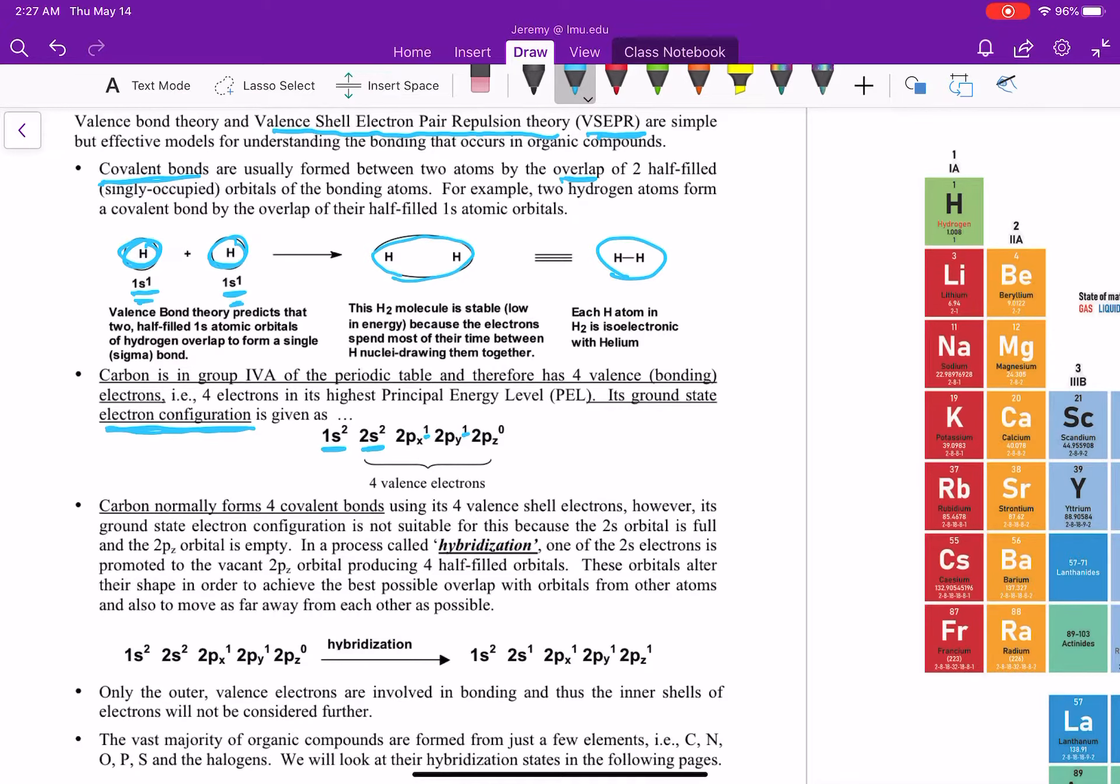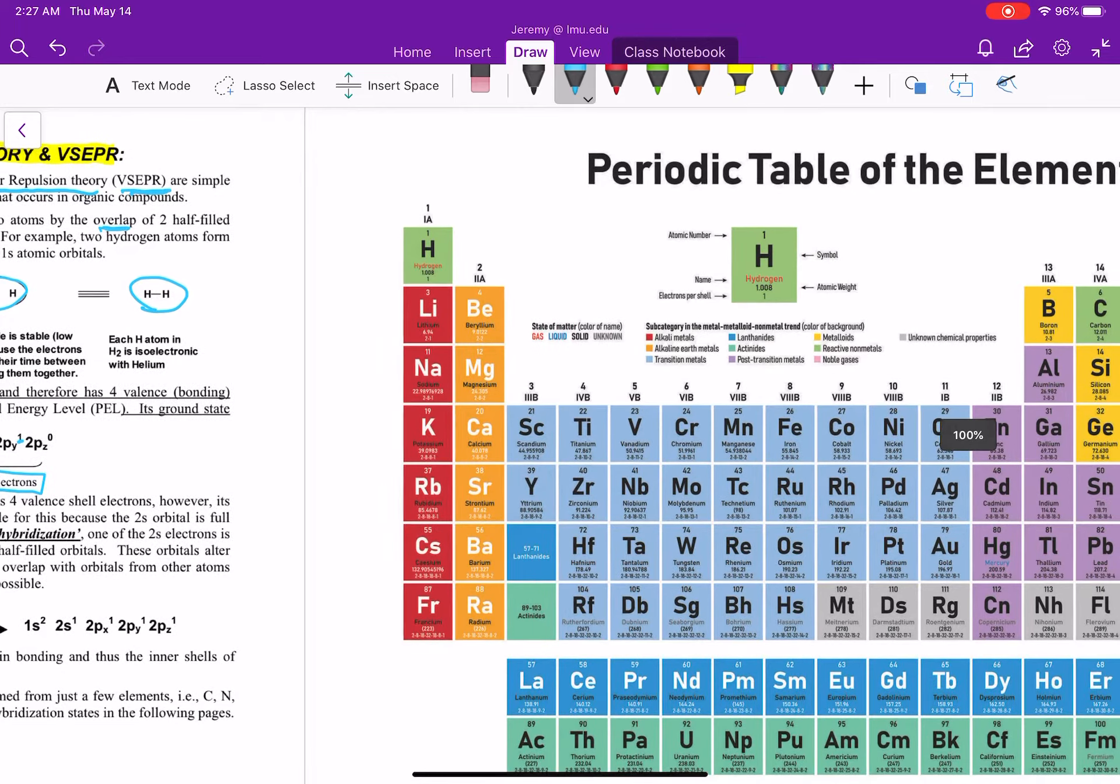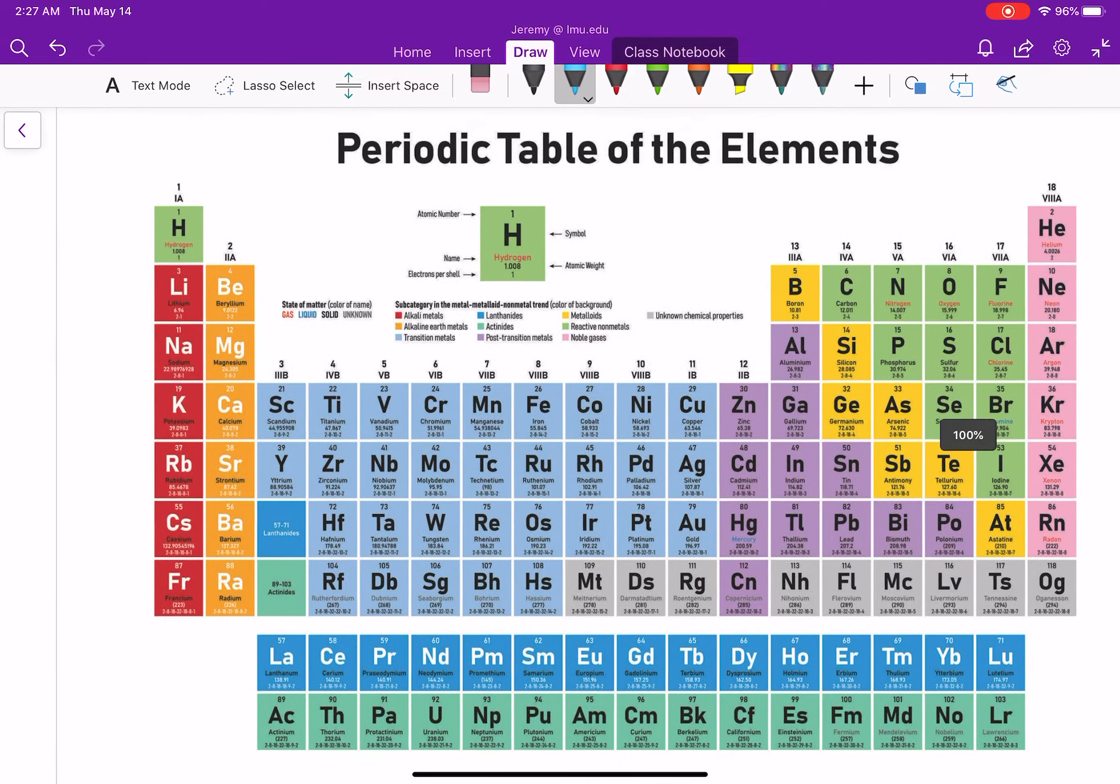But we don't actually need the full electron configuration. We just need to know how many valence electrons we have. That's really the key here. So let's go take a look at our periodic table to really understand about valence electrons.